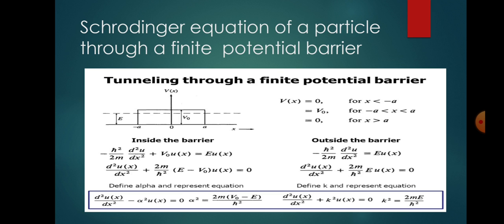Similarly, ψ(x) = Ce^(jkx) for x ≥ d. Here k = √(2mE/ℏ²) is a constant. For x ≤ 0, we have an incident particle wave function with amplitude A and a reflected wave function with amplitude B. For x ≥ d, we have the transmitted wave function with amplitude C.